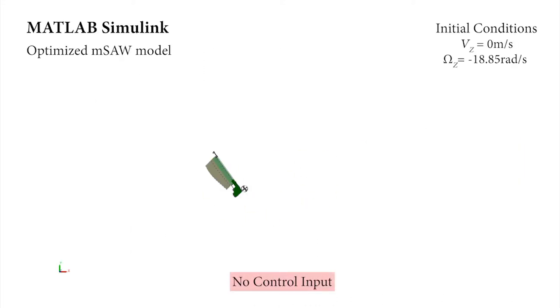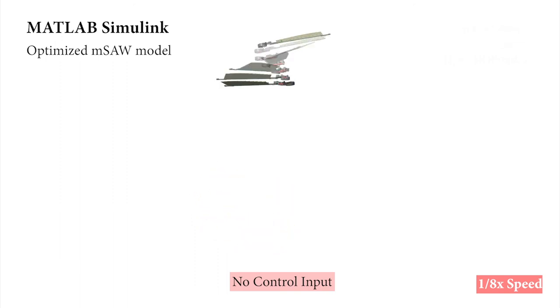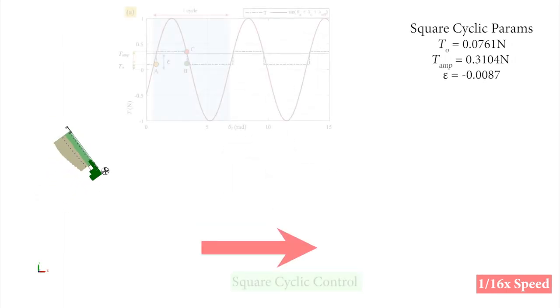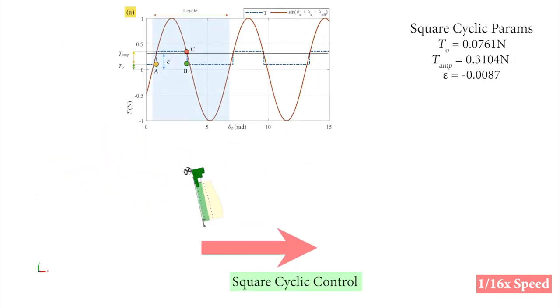Here is a simulation using optimized parameters. It achieves a steady state drop velocity of minus 3.01 meters per second and a rotation speed of minus 50.89 radians per second. It moves in a straight line under square cyclic control with optimized parameters achieving a glide angle of 40.9 degrees.